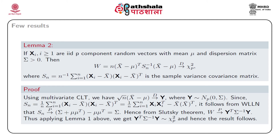For the proof, we first use the multivariate CLT: since x_i are iid, sqrt(n) * (x-bar - mu) converges in distribution to y, where y has a p-variate normal distribution with mean vector 0 and dispersion matrix sigma. Since S_n = (1/n) summation x_i x_i-transpose minus x-bar x-bar-transpose, by Slutsky's theorem, S_n converges in probability to sigma. Therefore, w converges in distribution to y-transpose sigma-inverse y. Applying Lemma 1, y-transpose sigma-inverse y is distributed as chi-square with p degrees of freedom, completing the proof.